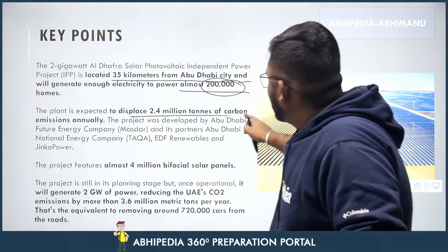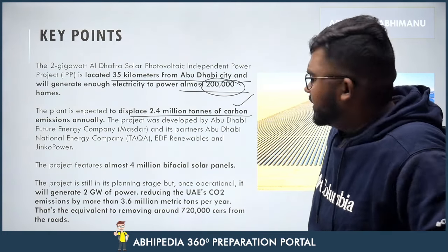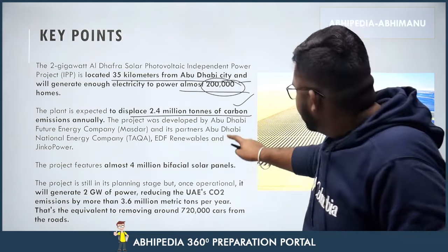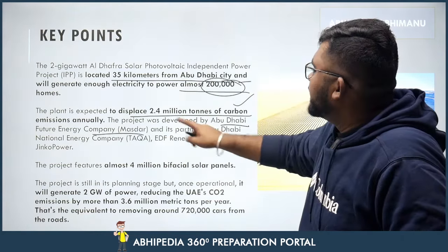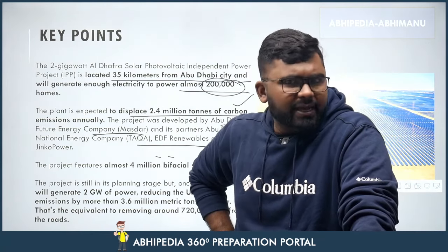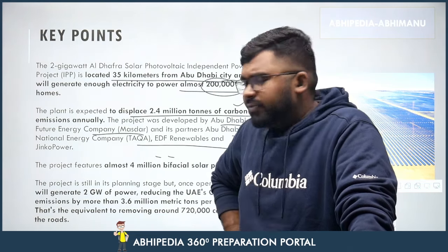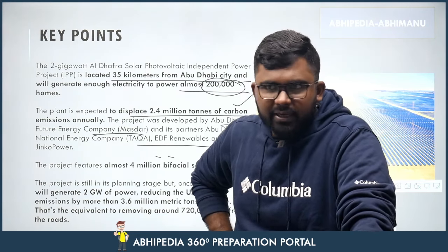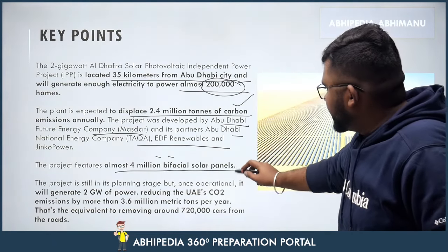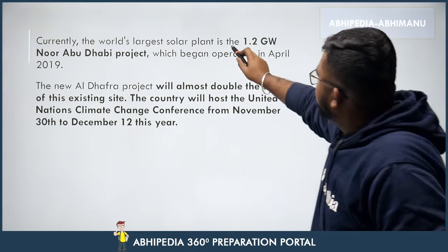The plant is expected to displace 2.4 million tons of carbon emissions annually — that is the key benefit of renewable energy. The project is developed by Abu Dhabi Future Energy Company and its partner Abu Dhabi National Energy Company along with EDF Renewables. The project features almost 4 million bifacial solar panels.